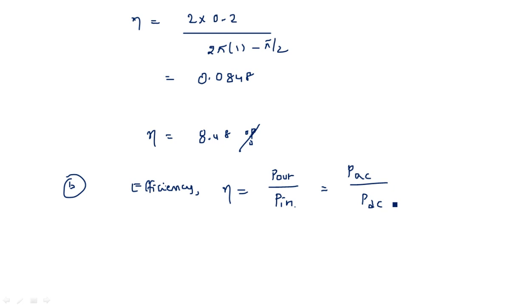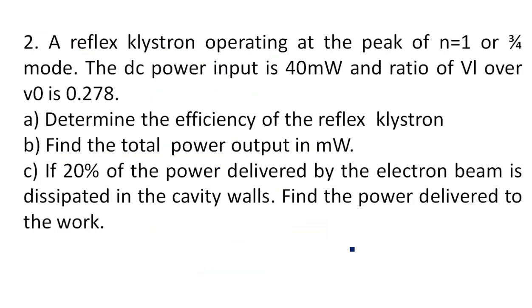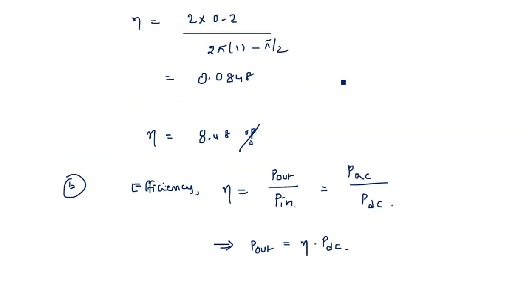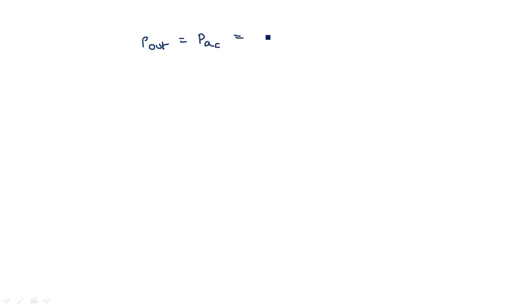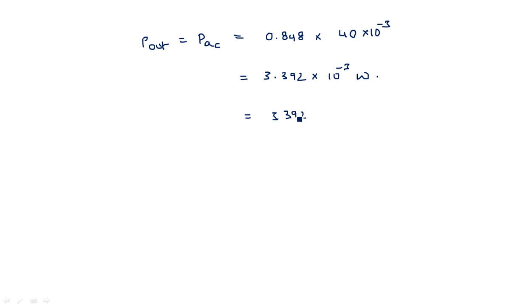From this we can write P_out = η × P_dc. The DC input power is given as 40 milliwatts. Therefore P_ac = η × P_dc = 0.0848 × 40 × 10⁻³ watts, which equals 3.392 × 10⁻³ watts, or 3.392 milliwatts. This is the AC output power.